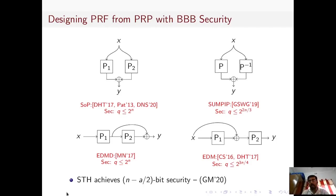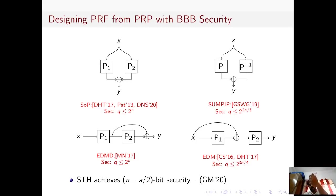The other construction, recently proposed by Gunsing and Mennink, which we call the Summation-Truncation Hybrid technique, takes an (n-1)-bit input and truncates the leftmost a bits of the output of the permutation evaluated at x‖0 and x‖1. It then XORs the remaining (n−a)-bit outputs of the permutation evaluated at x=0 and x=1, eventually producing an (n+a)-bit output. This construction has been shown to be secure up to (n−a)/2-bit security, where n−a is the number of discarded bits.